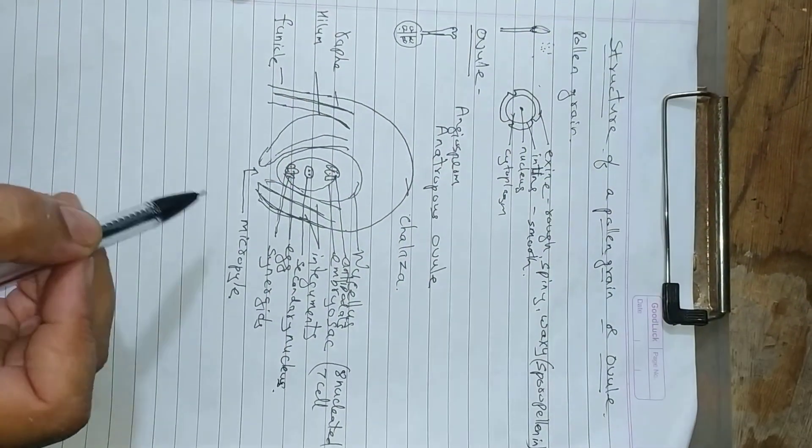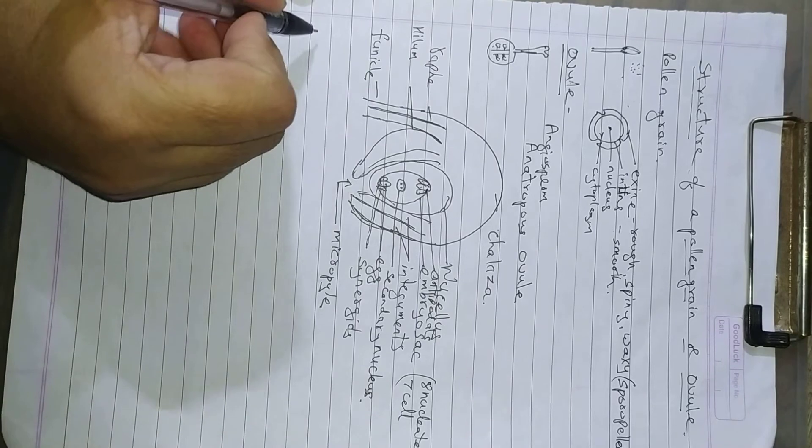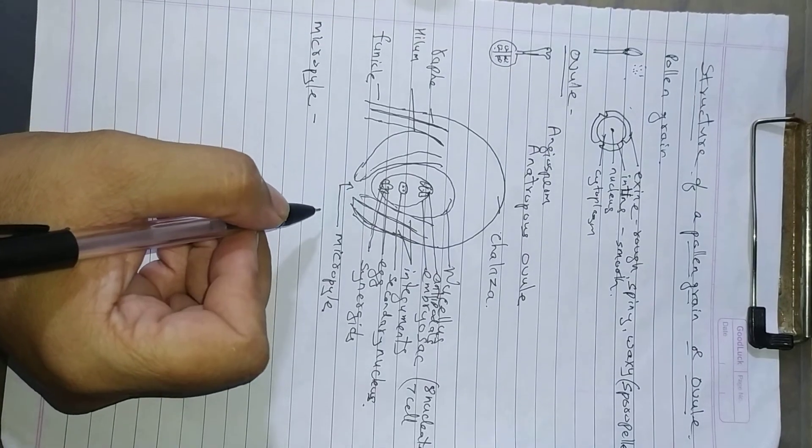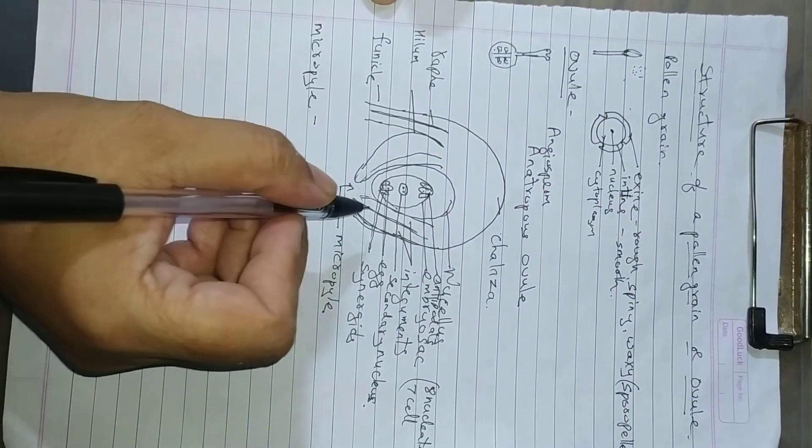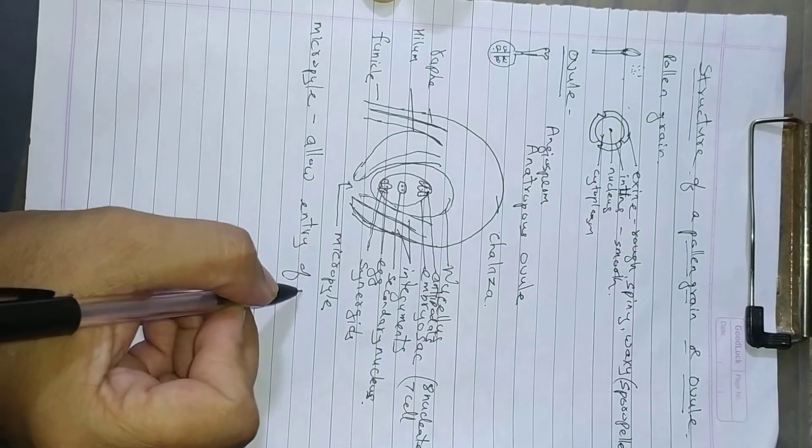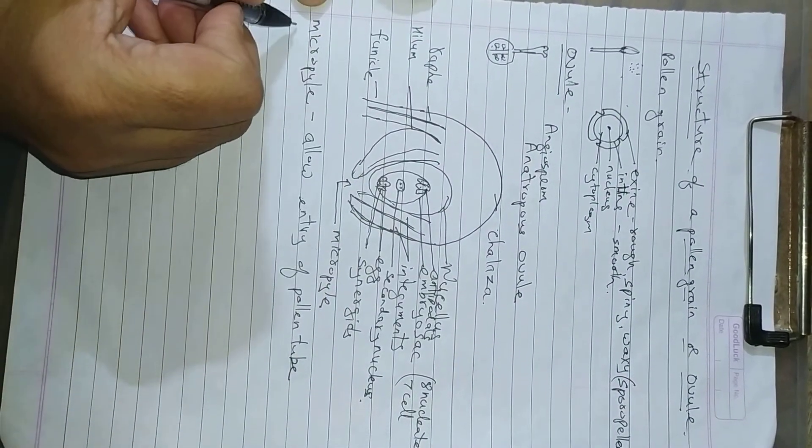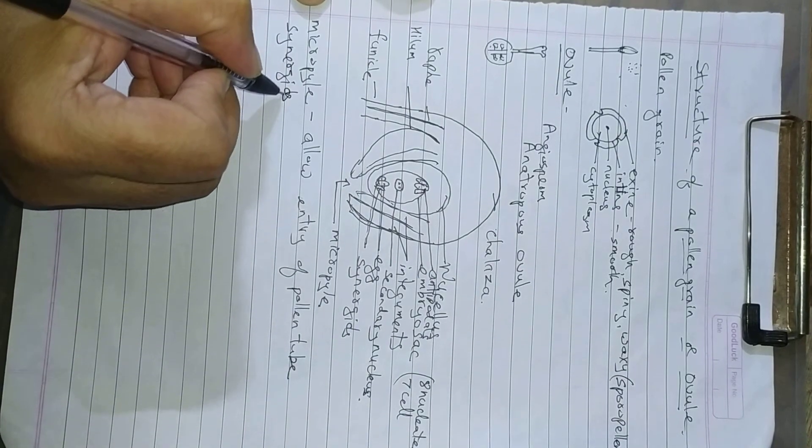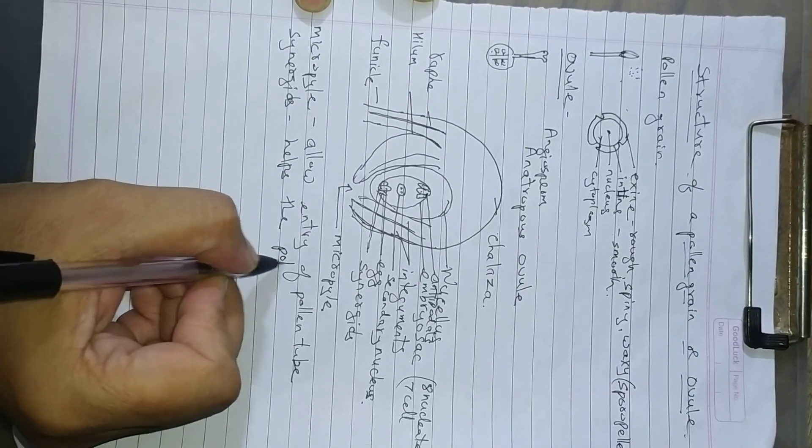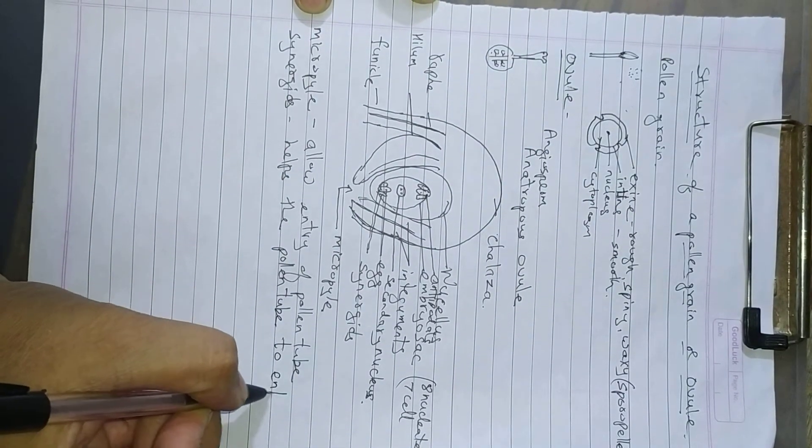Let us study the function of each part in detail. First is the micropyle. Micropyle allows the entry of pollen tube. It allows the entry of the male gamete, entry of pollen tube. The synergids, they help the pollen tube to enter.